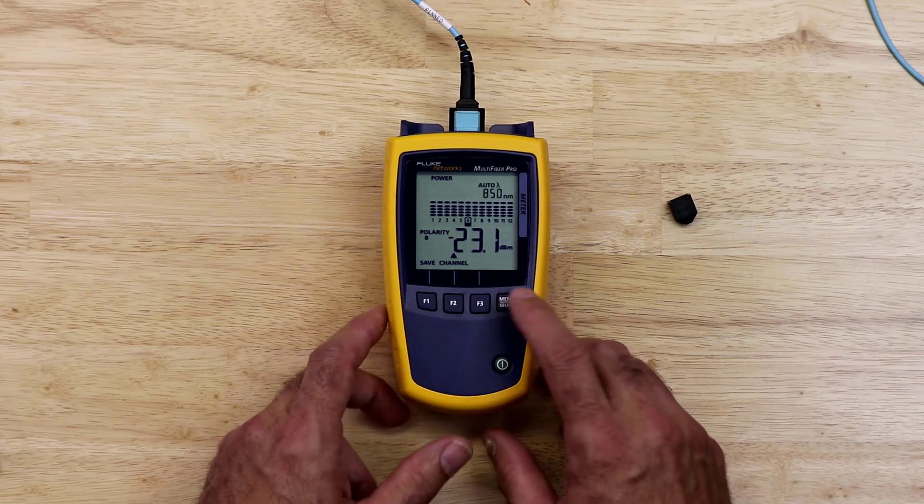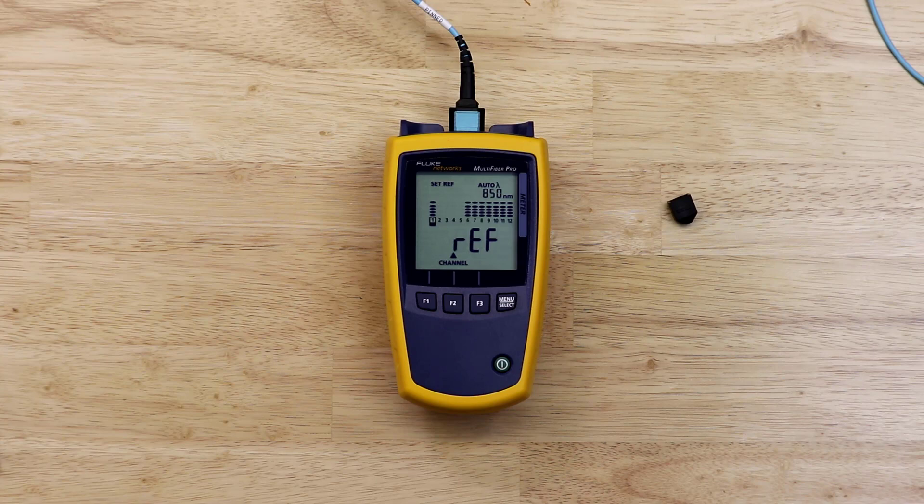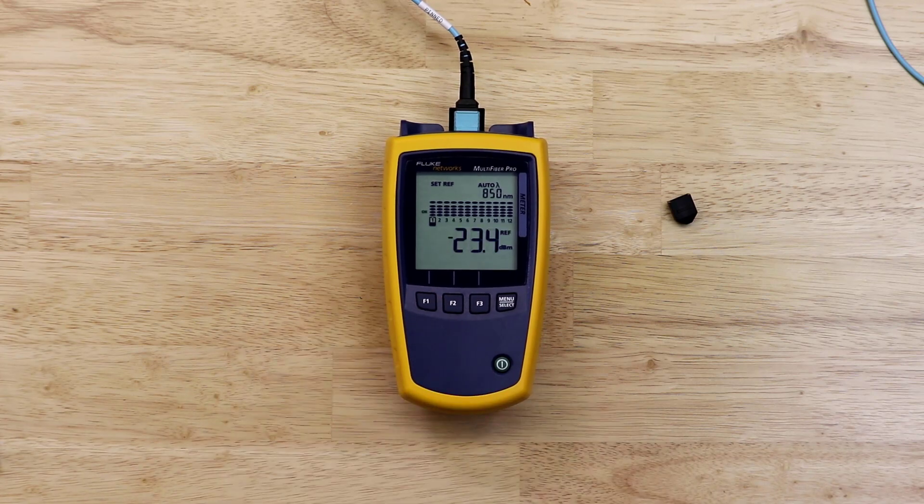To get to the set reference option, I will press menu select once. Referencing will begin automatically. After the meter has gone through all 12 channels, I will press save to set the reference. Once the reference has been set, the meter will switch to the loss screen. It is best to keep an eye on this screen for about 30 seconds.